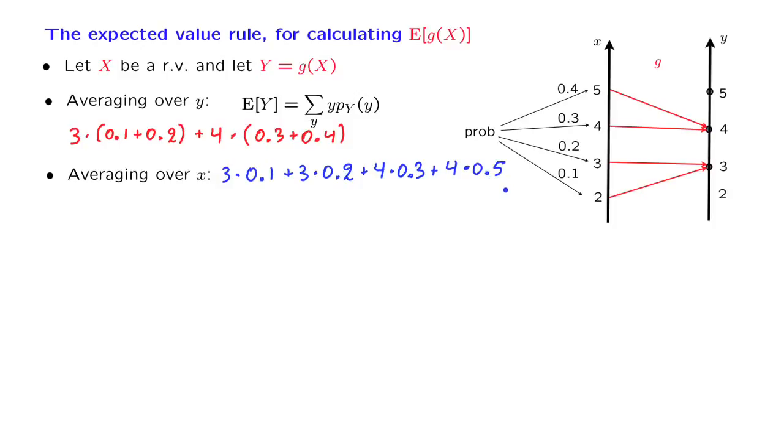This second way of calculating the expected value of y is called the expected value rule. And it corresponds to the following formula. We carry out a summation over the x-axis. For each x-value that we consider, we calculate what is the corresponding y-value, that's g of x, and also weigh this term according to the probability of this particular x.